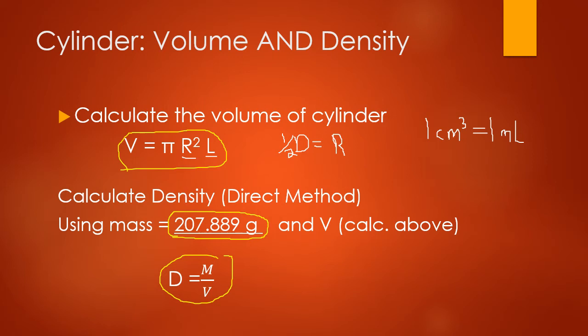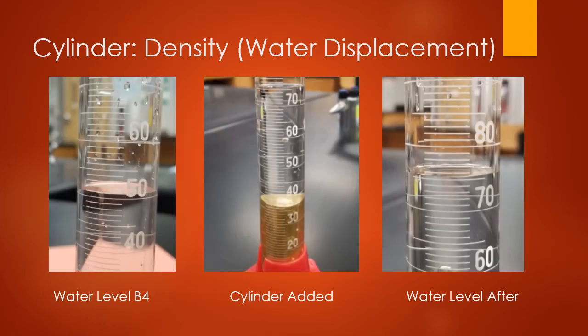Make sure to show your calculations and use the appropriate significant figures. The next part is determining the density of a metal bar by water displacement using a graduated cylinder. We'll use that same cylinder we just measured. We start with a 100 milliliter graduated cylinder and record the water level before adding the cylinder. I added approximately 50 milliliters, but I want you to tell me exactly how many you see — remember, go one past what the device allows.